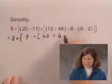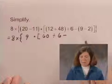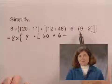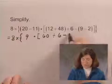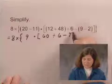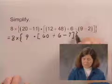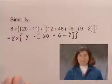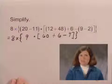Copy the division sign. Copy the 6. Copy the subtraction sign. And simplify what's inside the last set of parentheses, 9 minus 2. That's 7. I'm going to close with the brackets and the braces, and I have simplified inside the innermost set of grouping symbols.